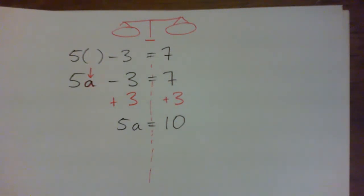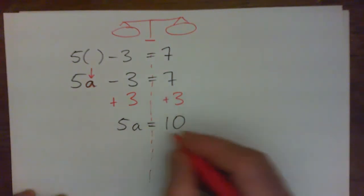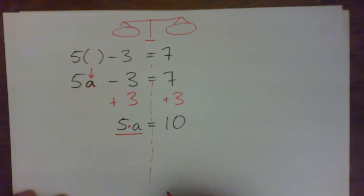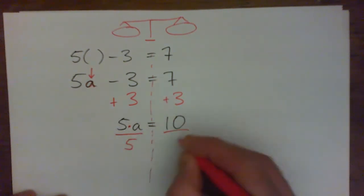Now a is being multiplied by 5. So to get a by itself, we do the opposite of multiplying by 5. We divide by 5 on both sides.